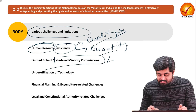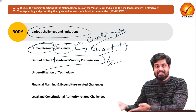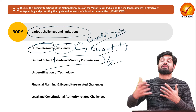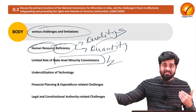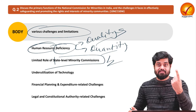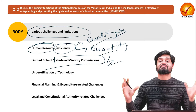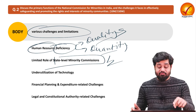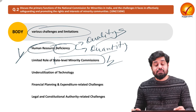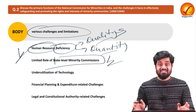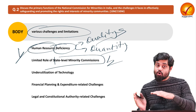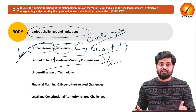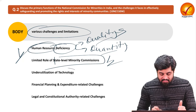Limited role of state level minority commissions is another challenge. If complaints are resolved at the state level, the central commission will not be overburdened — multiple commissions exist at each state level while only one exists at the union level. If complaints accumulate from all states at the central level, the task becomes enormous — compounded by human resource deficiency. There is a need to properly integrate state level commissions with the structure of the national commission for minorities.